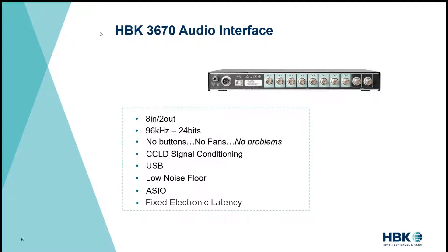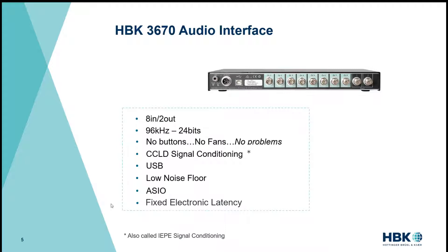HBK introduced the 3670 audio interface. It has eight inputs, two outputs, a sampling frequency of 96 kHz, 24 bits. It has no buttons, no fans, and no problems. It has CCLD signal conditioning so you can connect microphones, accelerometers, and force transducers directly to the box. It has a USB interface, low noise floor, an ASIO driver, and the team in Europe worked hard to achieve a fixed latency between the input and the output.